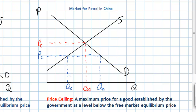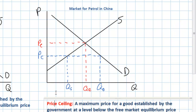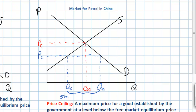So not surprisingly, we have a disequilibrium in the market for petrol. The quantity demanded now is greater than the quantity supplied, which implies a shortage. At this lower price than the free market equilibrium, consumers will demand more petrol than will be available. There is a shortage in the market for petrol. A shortage occurs when the quantity demanded exceeds the quantity supplied.